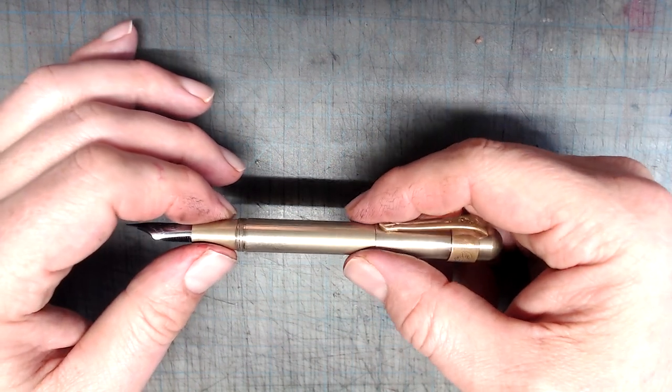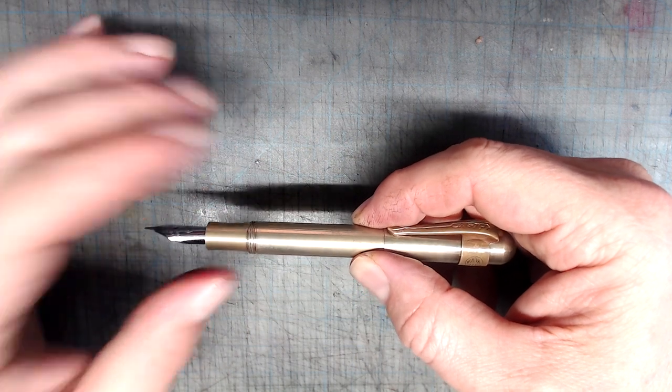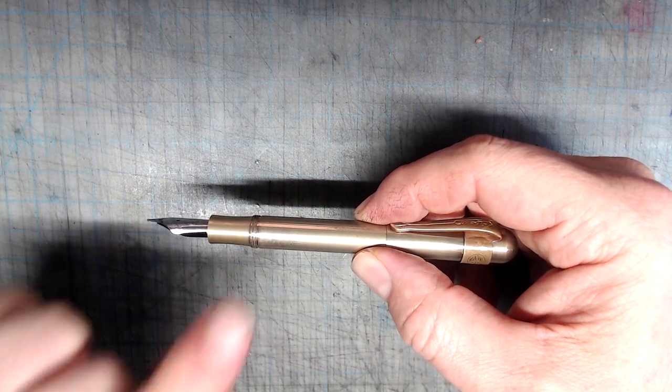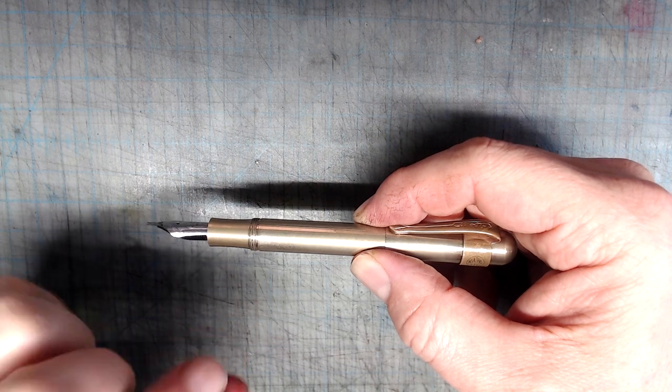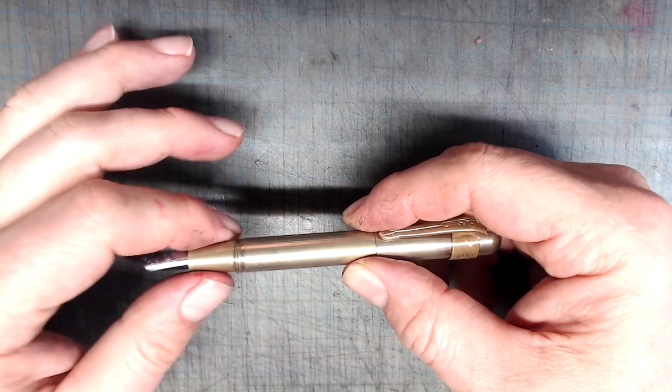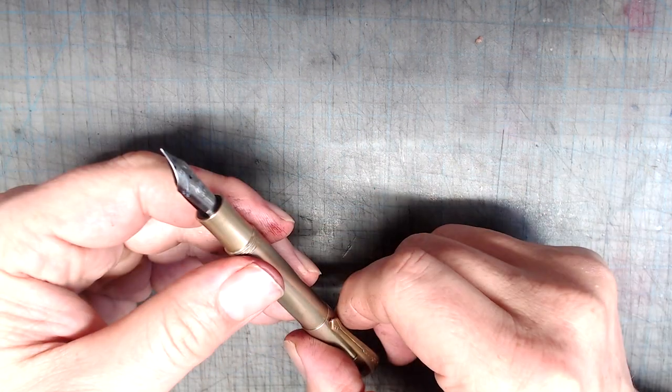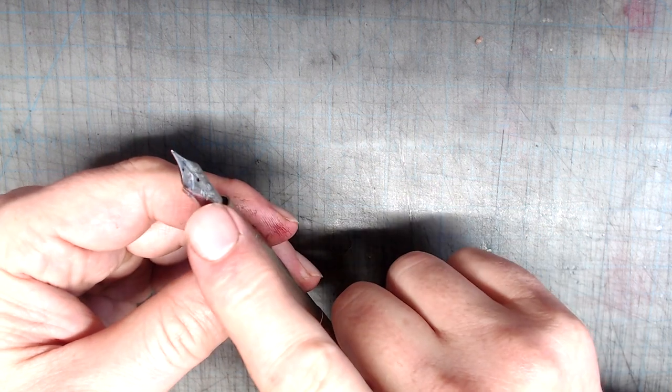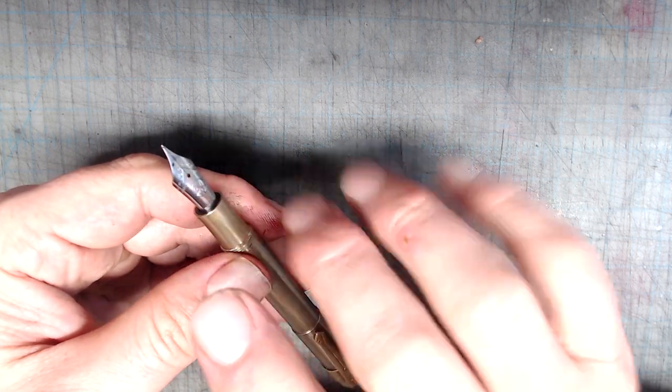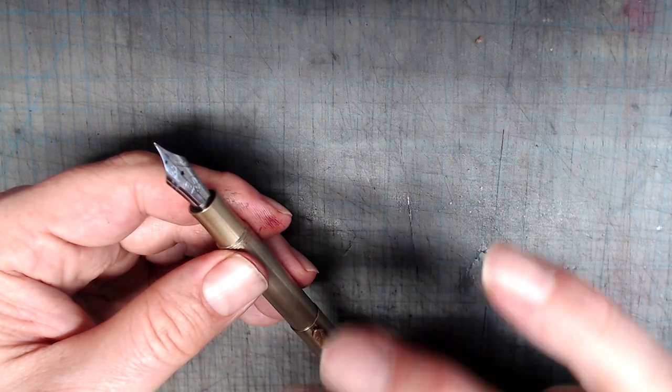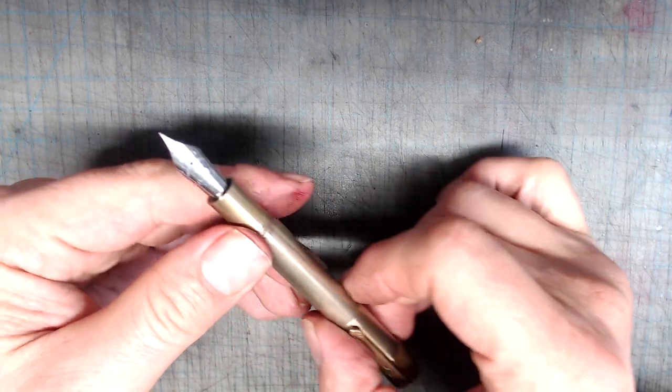And as with the Lilliput, it cannot be used with Kaweco's little converter. But again, all that means is that you have to carry some extra cartridges around with it. What's great about the Supra, and it's actually an advantage over the Sport, is that this pen uses a standard number 6 nib, which allows you to swap it out for a huge number of other nib options. While that was my initial plan, it turned out that the original fine nib on the Supra was actually very good, with a smooth tip and a bit of bounce that allows for some line variation. Let's take this nib out for a test drive and see just how it performs.